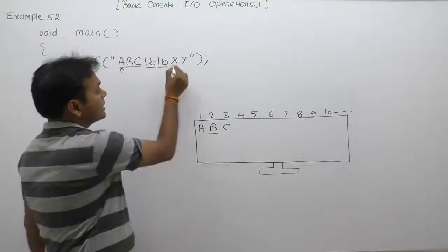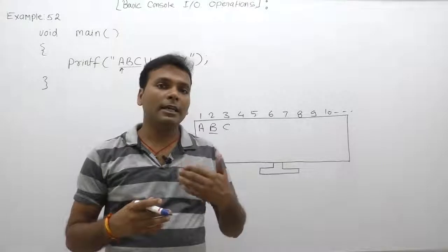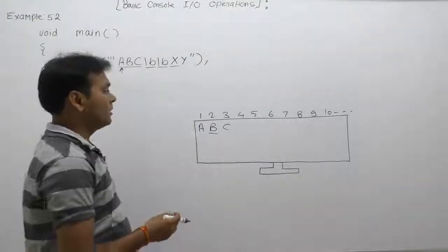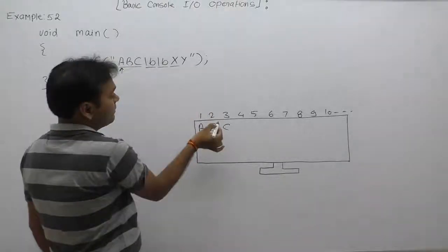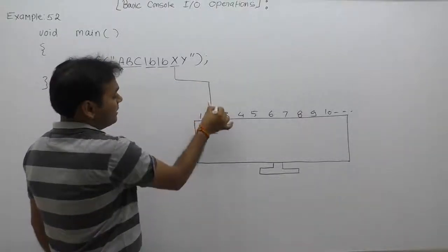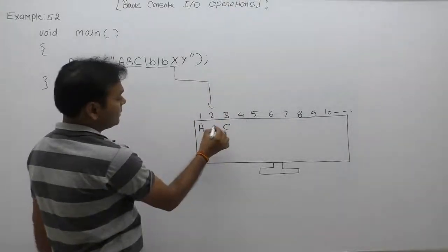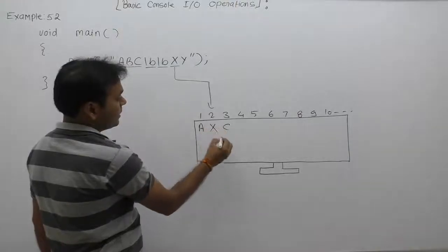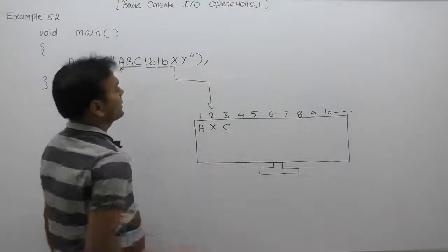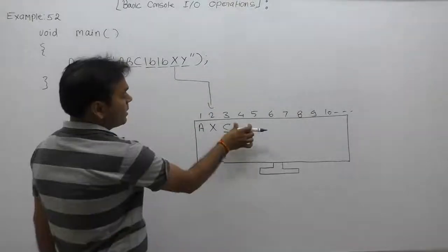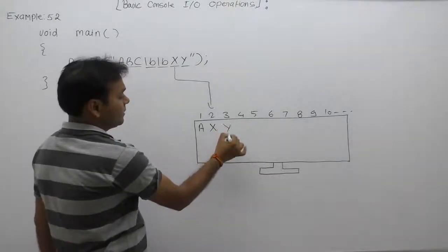Next, it prints 'x', which is a printable character. Since the cursor is on the second position, printf prints 'x' there, replacing character 'b'. After printing 'x', the cursor moves to the next position, then it prints 'y', replacing character 'c'. Now 'c' is replaced by 'y', and the cursor is at the fourth position.